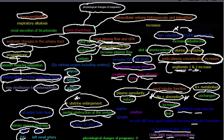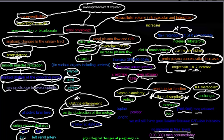We also covered how hyperventilation in pregnancy leads to respiratory alkalosis. The kidney's buffering system deals with this by increasing renal excretion of bicarbonate, allowing the kidney to get rid of excess bicarbonate from the blood.